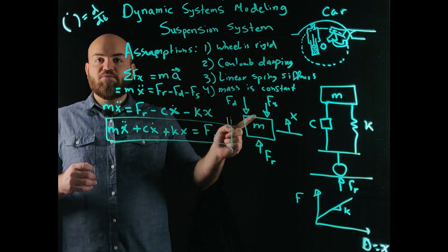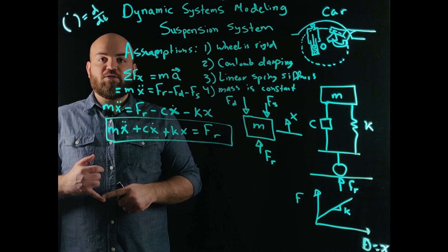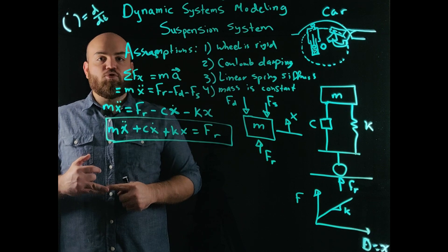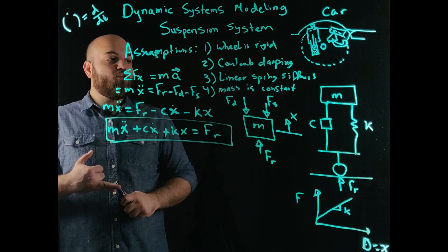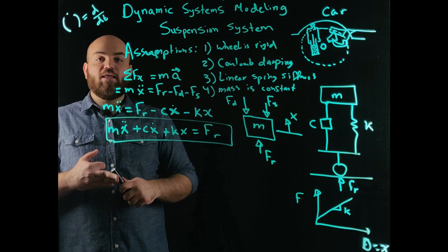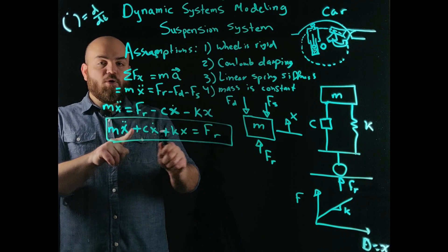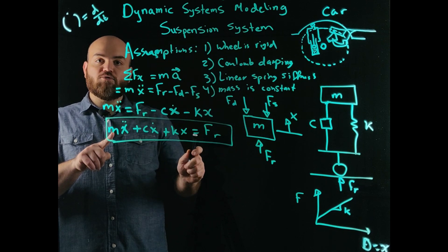So this is our suspension system. Given the mass of the vehicle, and the stiffness of the suspension, and the damping of the shock absorber, and assuming all the assumptions where the wheel is rigid, we have Coulomb damping, we have a linear spring and constant mass, you can describe the motion of that mass in the x direction, given the second order differential equation.